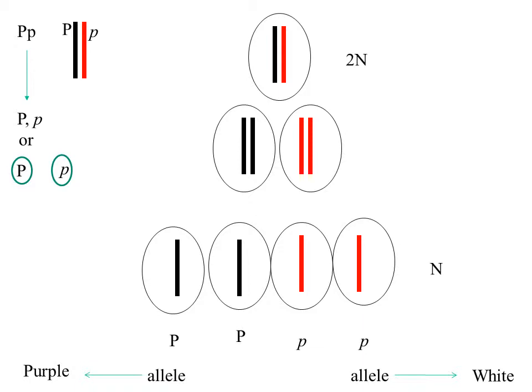We could also draw that out to look something like this. You have a heterozygous individual but they express the purple color. But on the molecular level their chromosomes would look like this — they would have one allele that is big P and one allele that is little p. When that individual goes through meiosis, 50% of their alleles would have a big P and 50% of their alleles would have a little p.